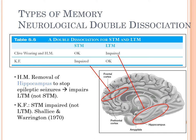We can also study memory through neurological double dissociations. In a double dissociation, one patient with damage to structure A shows function A impaired while function B is intact; another patient with damage to structure B shows function A intact while function B is impaired. This demonstrates that short-term and long-term memory depend on different brain structures that can operate independently of each other.